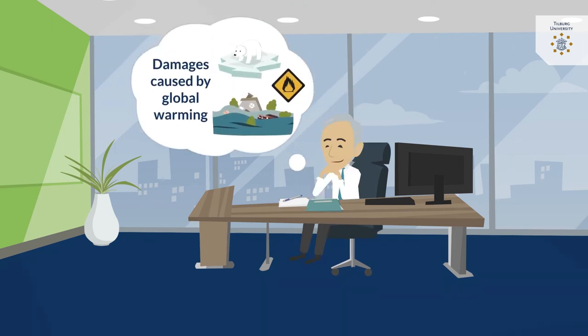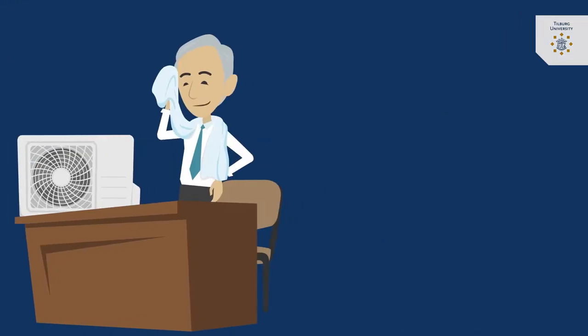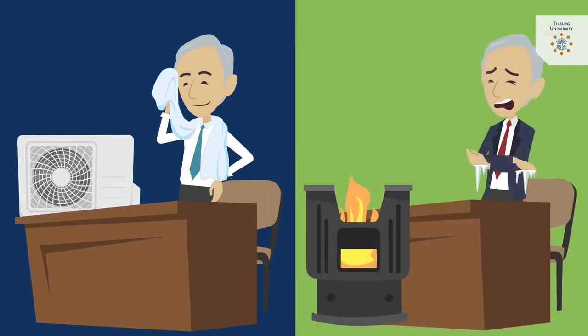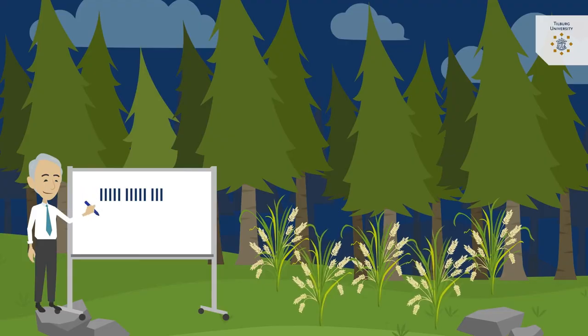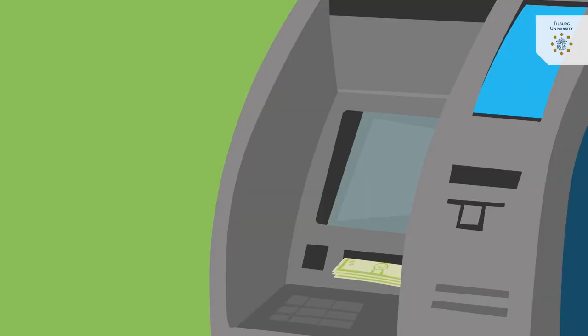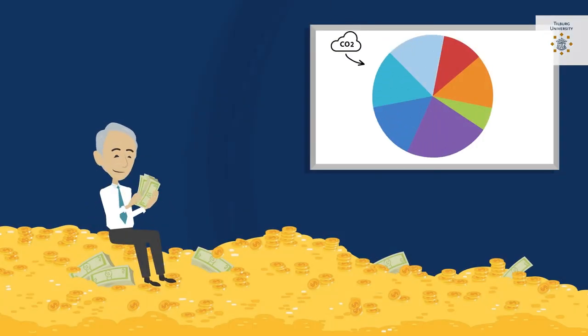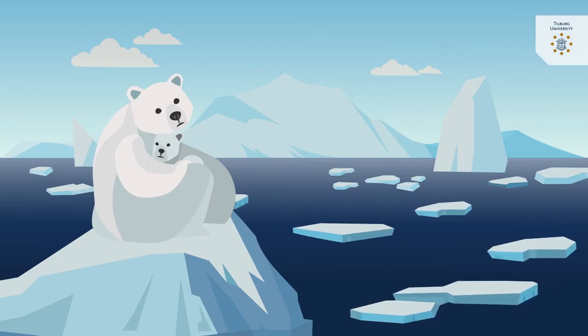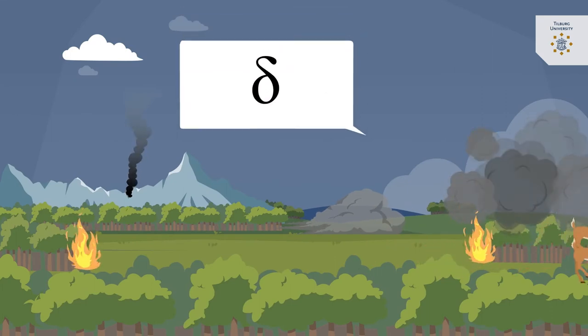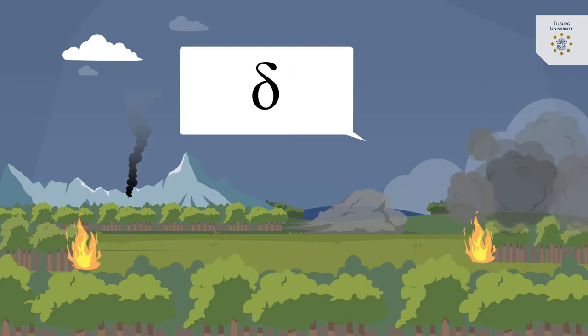The first step is to calculate the damages caused by global warming. We can calculate the costs of air conditioning in summer when it becomes warmer, and the prevented costs of heating in the winter. We can calculate which crops may grow when the climate changes, and how much they change the value of farming. In this way, economists have found damages to be in the order of a few percentage points of our income for each degree Celsius of global warming. In this video clip, we will use the symbol delta for this damage estimate.